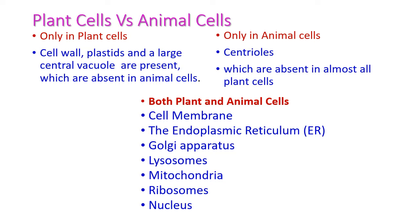The cell wall, plastids, and a large central vacuole are present only in plant cells, which are absent in animal cells. Whereas the centrioles are present only in animal cells, which are absent in plant cells.